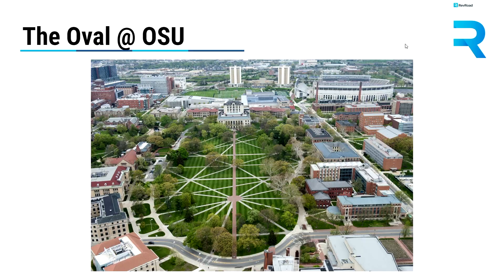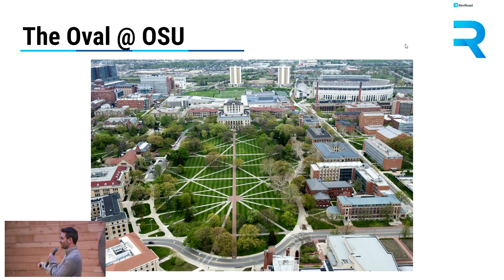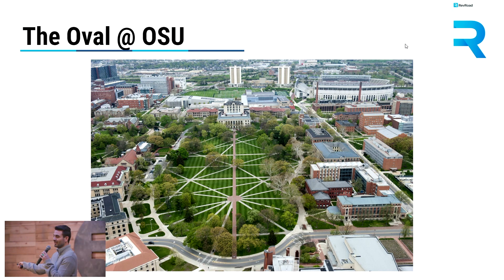All right, desire paths. We're going to go to Ohio State University. A lot of you sports fans are going to recognize this building right here. This is known as the Horseshoe — one of the most famous college stadiums in the world. But today what we're going to be talking about is this right here. It's known as the Oval.